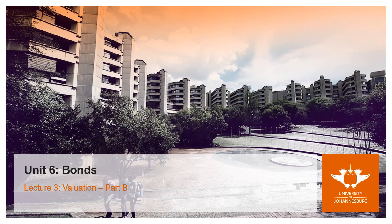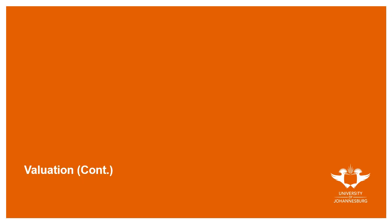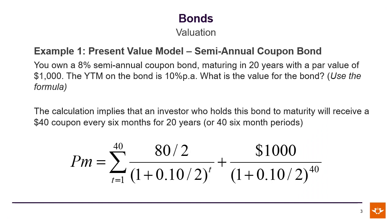Unit 6, Bonds, Lecture 3, Valuation Part B. The example we'll be looking at this time we will do in some detail. It will focus on a semi-annual coupon bond which pays an 8% coupon. It's maturing in 20 years, has a par value of $1,000, and the yield to maturity is 10%.